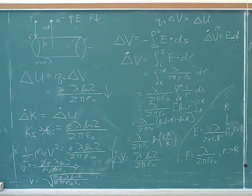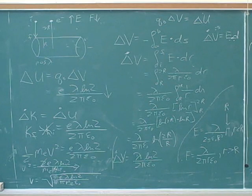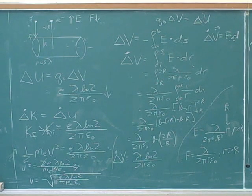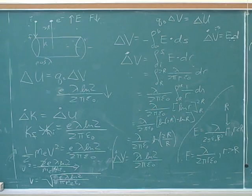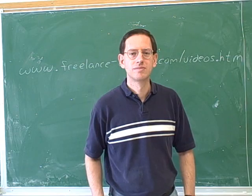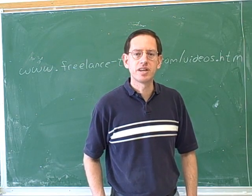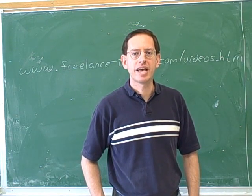If you have a constant electric field, that simplifies to just delta V equals the electric field times r. But if the electric field is not constant, you actually have to do this integral.